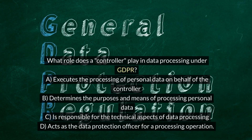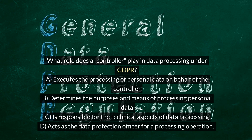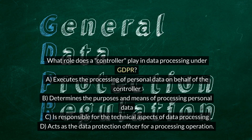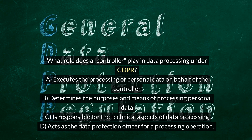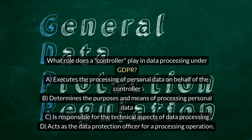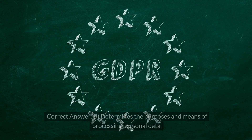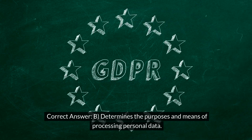What role does a controller play in data processing under GDPR? A. Executes the processing of personal data on behalf of the controller. B. Determines the purposes and means of processing personal data. C. Is responsible for the technical aspects of data processing. D. Acts as the data protection officer for a processing operation. Correct answer: B. Determines the purposes and means of processing personal data.